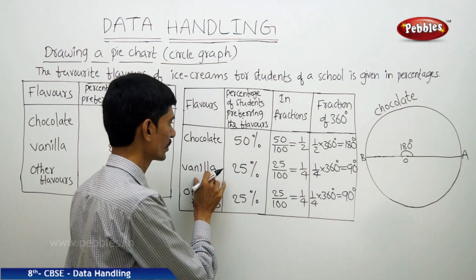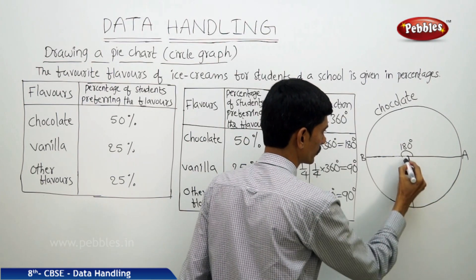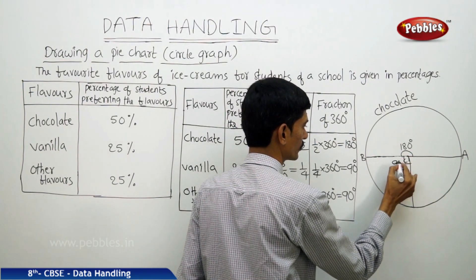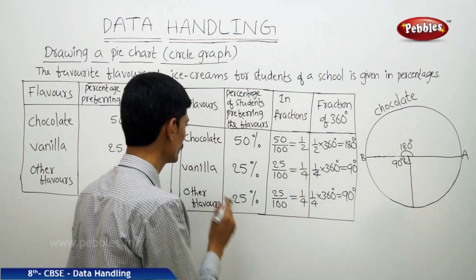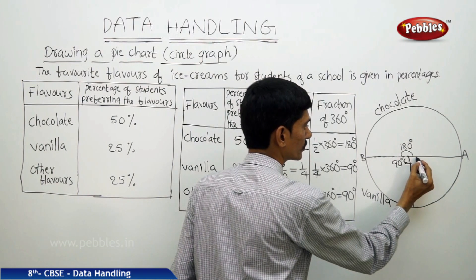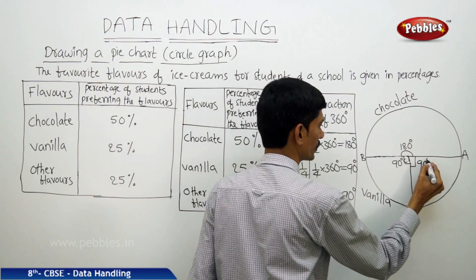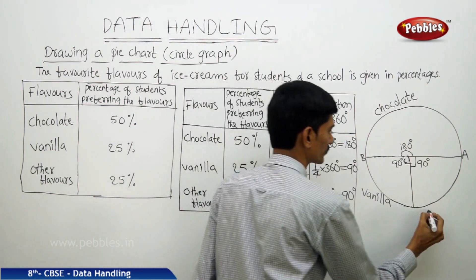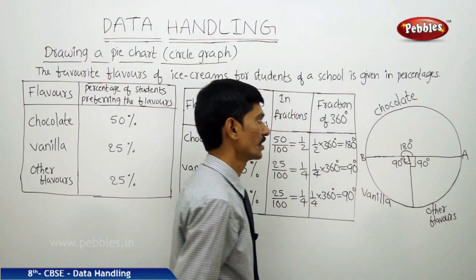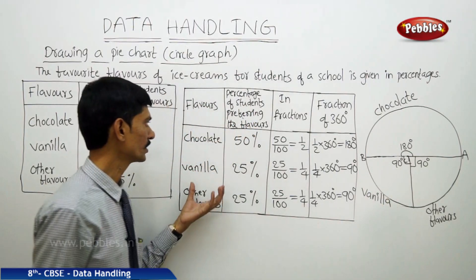The next sector has an angle of 90 degrees, so draw a right angle — this sector is represented by vanilla. The third sector also makes 90 degrees and is represented by other flavors. In this way, the whole circle is divided into sectors representing each piece of information given in the data.